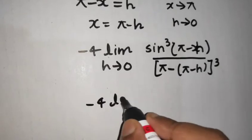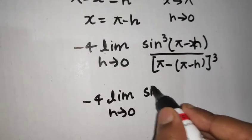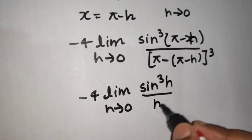So you will get minus 4 times limit h tending to 0 sin cube h divided by, pi and pi will get cancelled minus minus plus h so h cube.